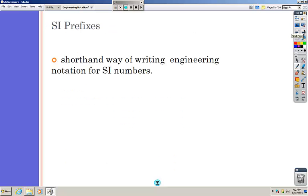So SI prefixes are just a shorthand way of writing engineering notation for SI numbers. They save space. It's faster. So that's a good thing. It makes us happy. We're pleased about that.